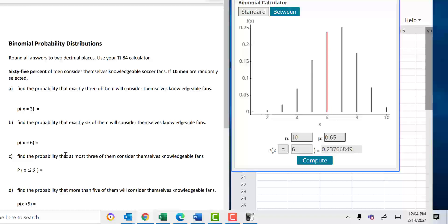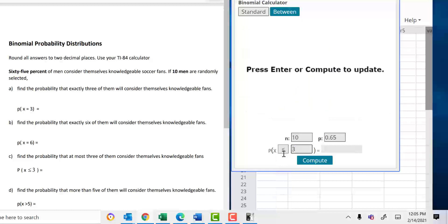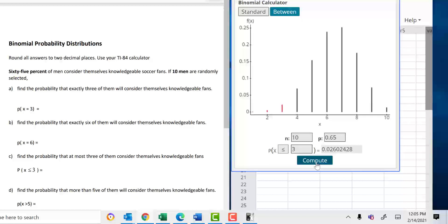C, find the probability that at most. At most you need to know means less than or equal to. So, you just put the less than or equal to 3. At most 3 means 0 or 1 or 2 or 3. And hit compute. You're going to get the answer, which is 0.0260.